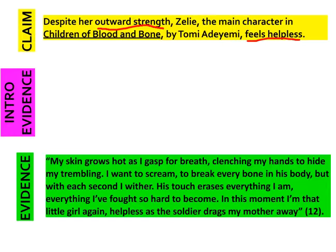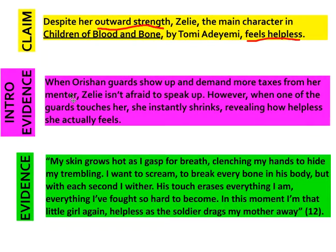So what does the reader need to know to understand this moment in the story? I think the reader needs to know that the Orishan guards have shown up, that they've demanded more taxes, that Zelie has actually shown strength by speaking out about how unfair it was, and that this moment is different. Here's my introduction to evidence: when Orishan guards show up and demand more taxes from her mentor, Zelie isn't afraid to speak up. However, when one of the guards touches her, she instantly shrinks, revealing how helpless she actually feels.